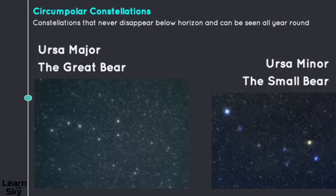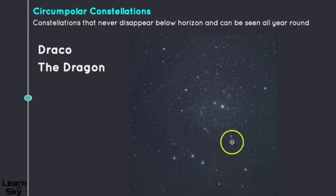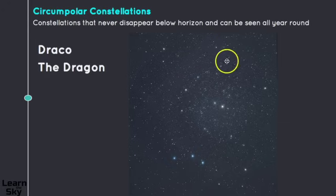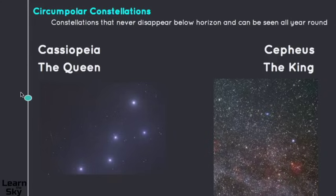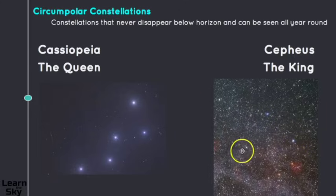Another circumpolar constellation is known as Draco the Dragon, and this constellation is sandwiched in between Ursa Major and Ursa Minor. Up here we have this trapezoid-like head, it comes down, wraps around, and its tail is in between the dippers. Our final two circumpolar constellations are Cassiopeia the queen, which has this W or M-like shape depending upon its orientation in the sky, and Cepheus the king, which looks somewhat like a house and can appear upside down or right side up.